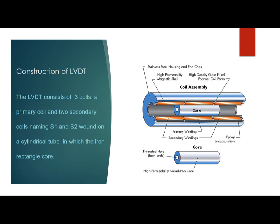In the construction of LVDT, as we talked about previously, V stands for variable, meaning a movable coil. We know that there is a coil inside the hollow tube. LVDT consists of three coils: a primary coil and two secondary coils, named S1 and S2. The voltage in S1 is EMF1 or E1, and the voltage in S2 is EMF2 or E2. There is a slender tube in which the iron core moves.